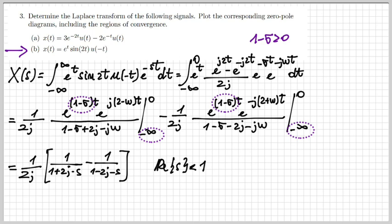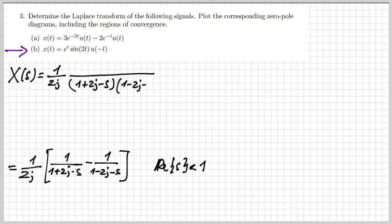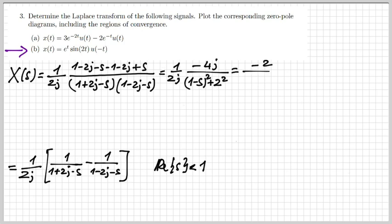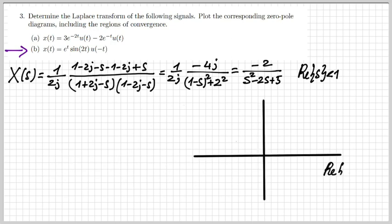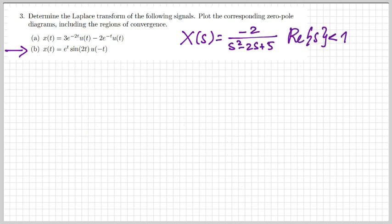Studying convergence: when t goes to minus infinity, I need the term (1 minus sigma) in the exponential to be positive for convergence. So convergence is guaranteed when real part of s is smaller than one. Proceeding with the algebraic manipulations, the final result is X(s) equals minus 2 over (s squared minus 2s plus 5) for real part of s smaller than one. The two poles are complex conjugates at 1 plus 2j and 1 minus 2j, and the ROC is the left half-plane to the left of those poles.